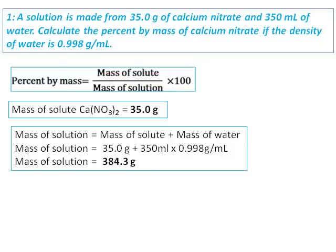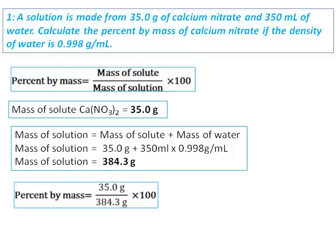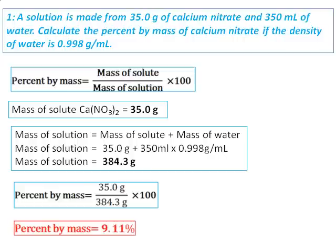Now I have the mass of solute and the mass of solution. Percent by mass can be calculated and that comes as 9.11.